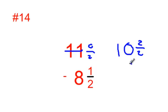So I have 10 and 2 halves minus 8 and 1 half. So 2 halves minus 1 half would be 1 half.